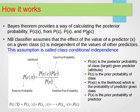A Naive Bayes classifier assumes that the effect of a predictor on a given class is independent of other predictors. Other predictors are independent from each other. This assumption is called the class conditional independence.